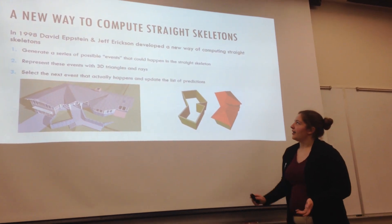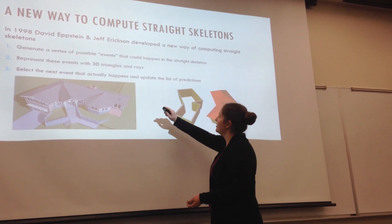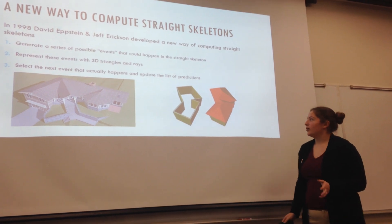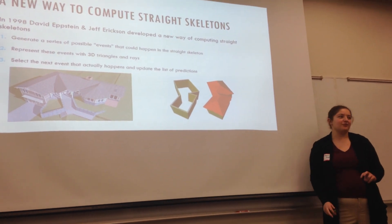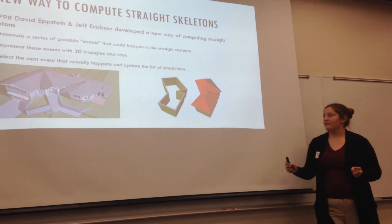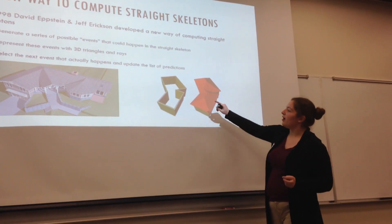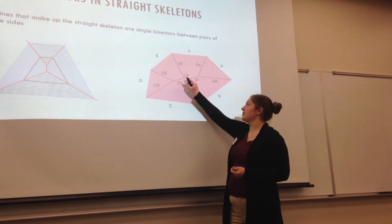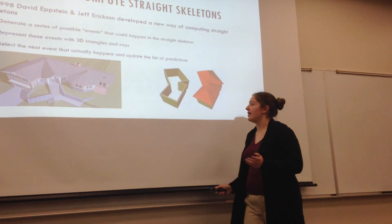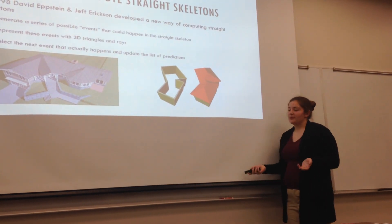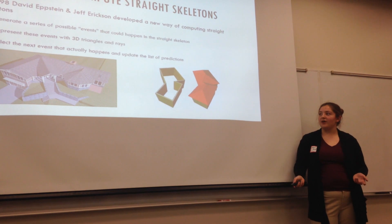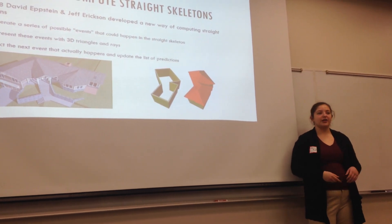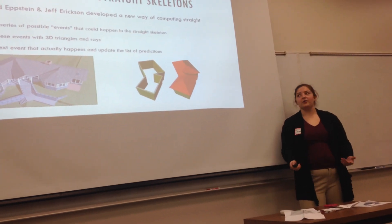David and Jeff Erickson developed a theorem for doing this more efficiently. It works by predicting the events that might happen in the straight skeleton. Events are the things that cause nodes — the points where the path changes. We represent those events as 3D triangles, then choose which ones actually happen, and repeatedly recalculate what might happen next.